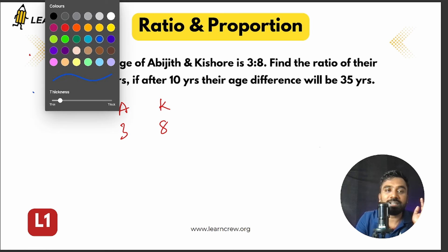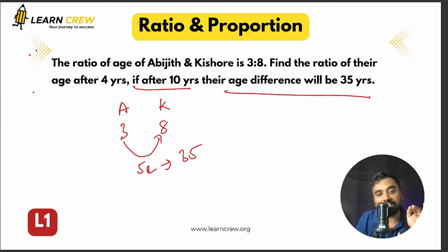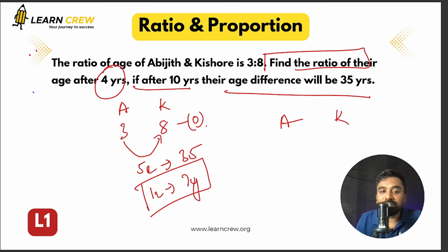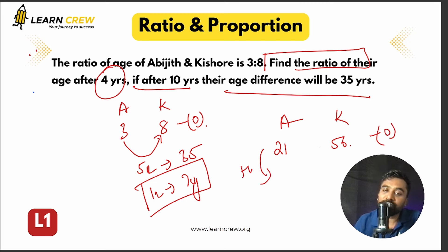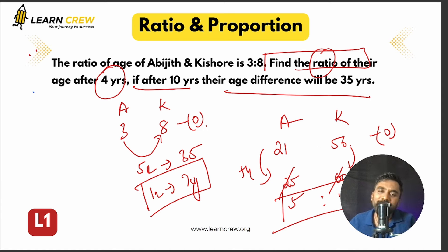After 10 years the age difference will be 35 years — meaning it's always 35 years. Ratio difference = 8−3 = 5 parts = 35 years, so 1 part = 7 years. Present ages: Abhijit = 3×7 = 21, Kishore = 8×7 = 56. After 4 years: Abhijit = 25, Kishore = 60. Ratio = 25:60 = 5:12.